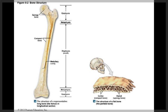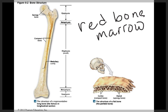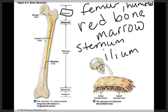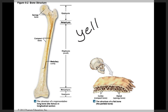Spongy bone within the epiphyses of long bones, such as the femur, and the interior of other large bones, such as the sternum and ilium, contains what's called red bone marrow. This is found in the epiphyses of long bones like the femur and humerus, as well as in larger flat bones such as the sternum and the ilium in the pelvis.